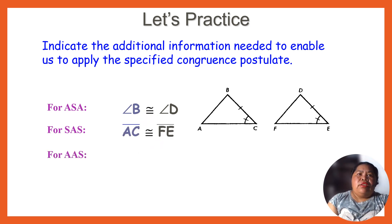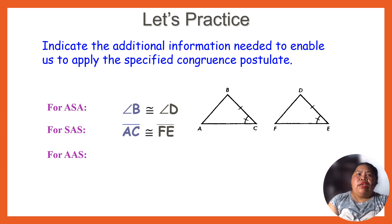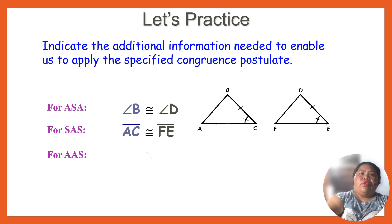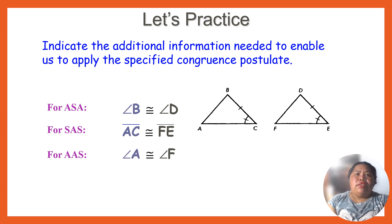For SAS: given is side AC congruent to FA. Therefore what we need here is side-angle-side — we can have this side and this side, so BC, and angle C is congruent to angle E. For the angle: angle C is congruent to angle E — we need that angle — so angle side, or we can have BC and TE.